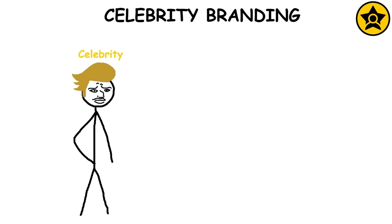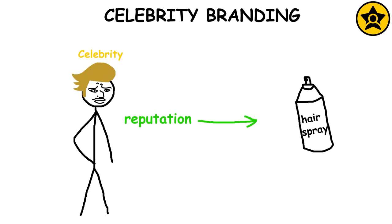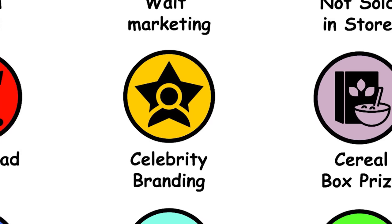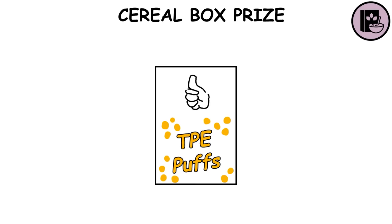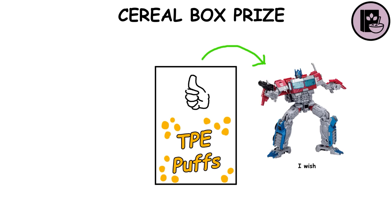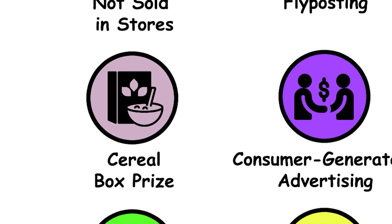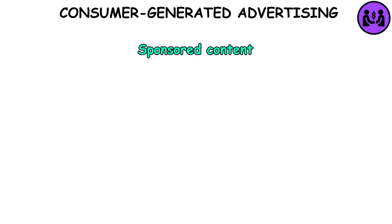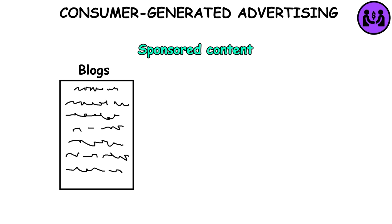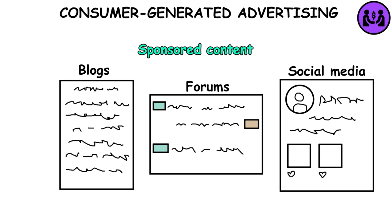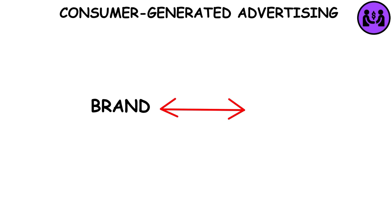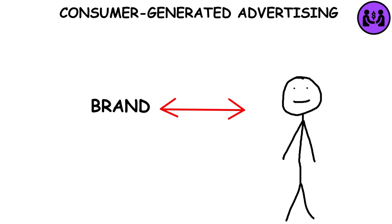Celebrity Branding: Leverages a famous person's reputation to promote a product or cause, aiming to transfer their positive image to the brand or issue. Cereal Box Prize: A promotional toy or item inside or on a cereal box serves as an incentive for kids to buy a specific breakfast cereal. Consumer Generated Advertising: Sponsored content on platforms like blogs, forums, and social media, often including links to a sponsor's website — associating the company's brand with the brand of the person sponsoring. It works best when the person sponsoring has a high-fidelity audience.